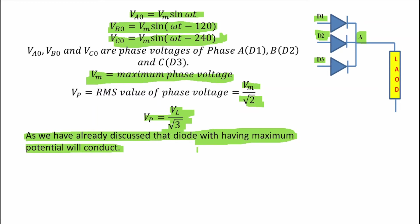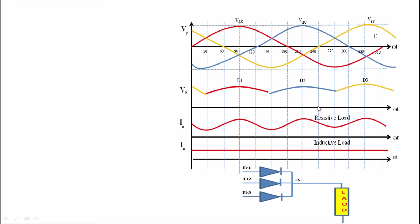These are the three waveforms of phase A, phase B, and phase C. They are phase displaced by 120 degrees because this is a balanced three-phase system. The red waveform is for phase A, Va0 = Vm sin(ωt − 120°), and the yellow waveform is for phase C, Vc0 = Vm sin(ωt − 240°).